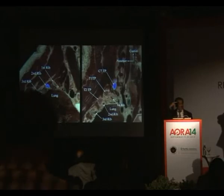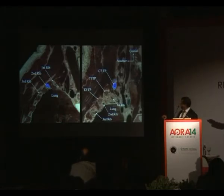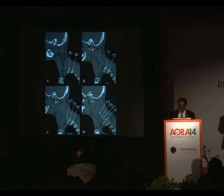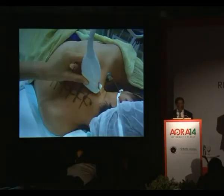Once you identify the C7 transverse process, you can count C7, T1, T2, T3, T4. So if you're doing a T5-T6 epidural, that's how you can locate it. You can see the first and second rib, and as you move immediately medially, the C7 transverse process appears. Moving medially further, you see the facet joints and then you start to see C7. This is the basic validation — easily studied in a PACS system.